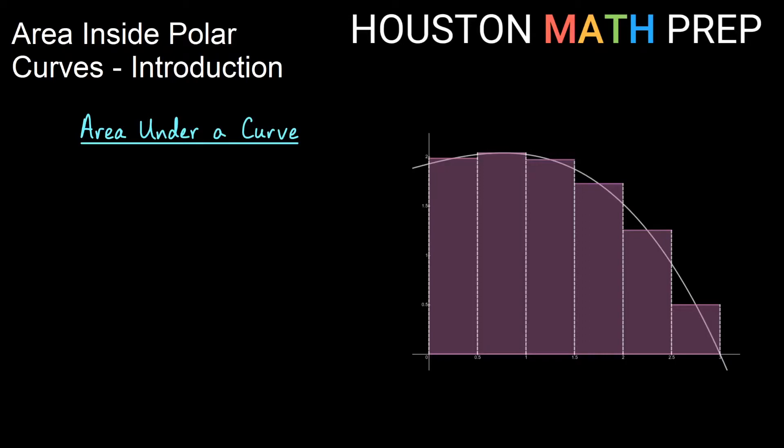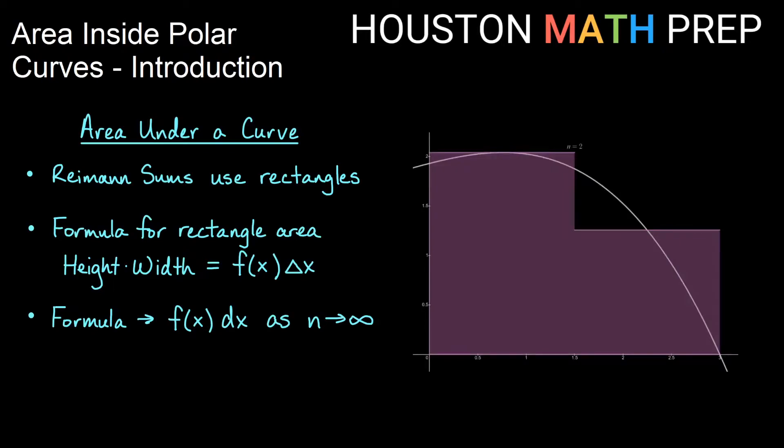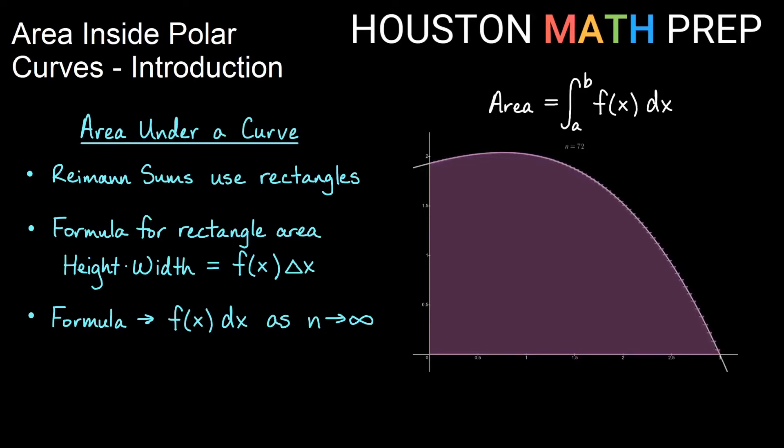So when we integrated area under a curve between the curve and the axis, some function of x, remember that we started with an idea of Riemann sums, we used rectangles, and the idea was that the formula for the area of a rectangle was the width times the height, and this really ended up being the function for the height, and then some width of the rectangle we called delta x. Now remember that f(x) delta x approaches the idea of f(x) dx as we cram more and more rectangles into our region, in other words as n approaches infinity, and what we end up getting is area being the integral from a to b of our function dx.